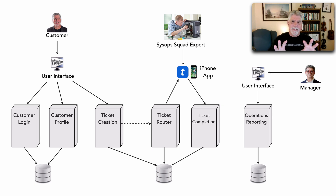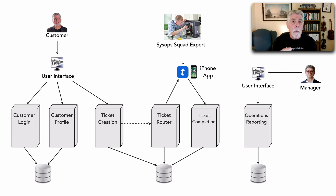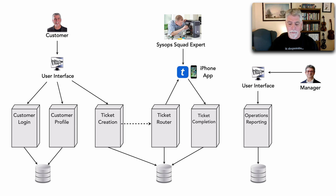When we look at this system, it is a distributed architecture, but how many separate parts are there to it? In other words, if we think about that definition of an architectural quantum — an independently deployable part of the system held together with synchronous dynamic coupling — how many totally separate, independent parts of the system do we have here?